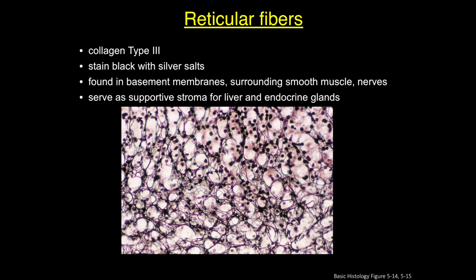Reticular fibers are composed of collagen type 3, which forms a network or reticulum of thin fibers. They are difficult to see in H&E preparations but stain black with silver salts and carbohydrate stains. These fibers are found in the reticular lamina of the basement membrane and surround adipocytes, smooth muscle, and nerves. They also form supportive stroma for secretory cells in the vasculature of the liver, endocrine glands, and are found in the stroma of bone marrow, spleen, and lymph nodes.